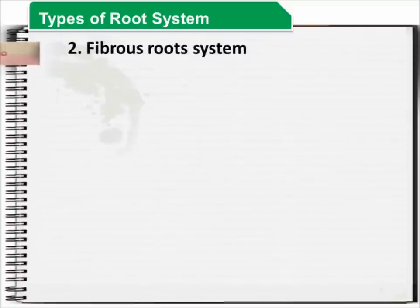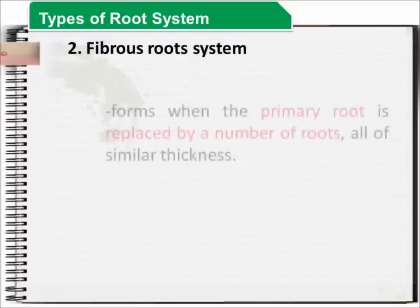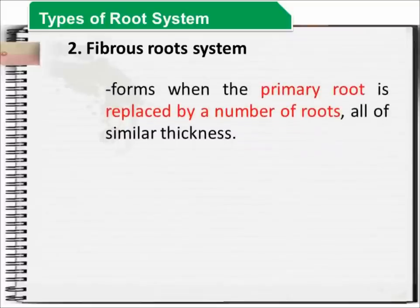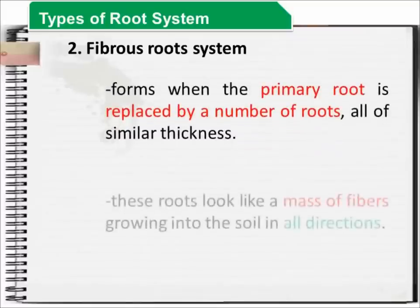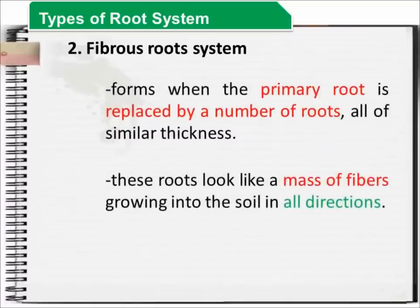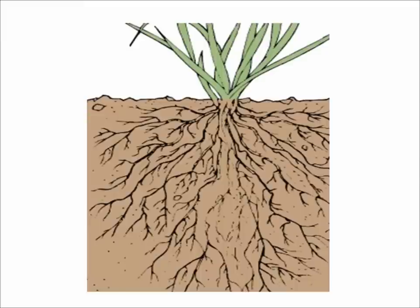The second type of root system is the fibrous root system, which is formed after the primary root is replaced by a number of roots with similar thickness, and looks like a mass of fibers growing in all directions. This is a fibrous root system with roots that are growing in all directions.